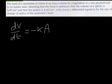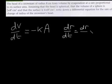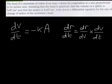But the question asks us to write down a differential equation for the rate of change of radius, so we really need dr/dt. We can write dr/dt = dr/dv times dv/dt using the chain rule. We know dv/dt is minus kA. For dr/dv, we're told the head is spherical, so the volume equals four-thirds pi r cubed.